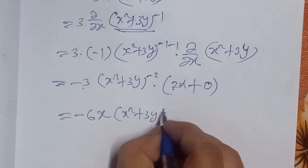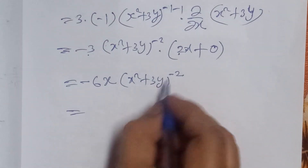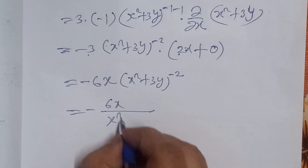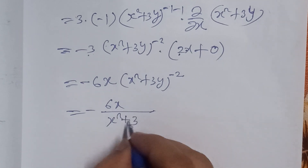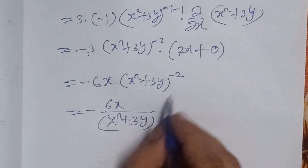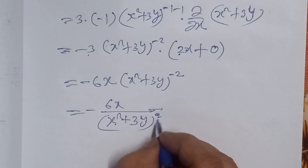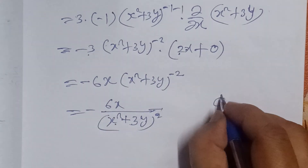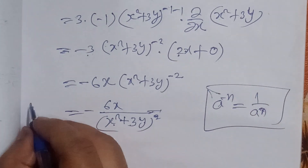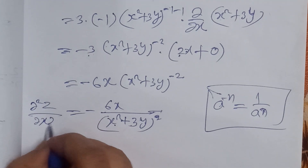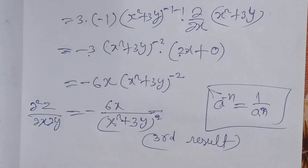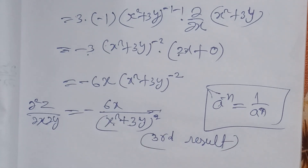Moving (x² + 3y)^(−2) to the denominator makes the power positive, giving del²z/del x del y = −6x/(x² + 3y)². This is our third result. Thank you very much for listening. Alhamdulillahi rabbi lal'amin.